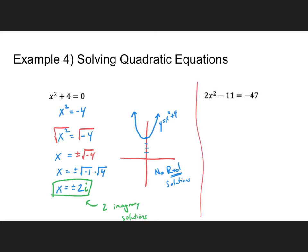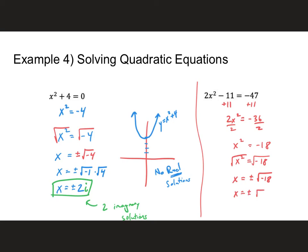Let's look at 2x squared minus 11 equals negative 47. Add 11 to both sides: 2x squared equals negative 36. Divide both sides by 2: x squared equals negative 18. Take the square root of both sides: x equals plus or minus the square root of negative 18. Simplifying — negative 1 times 9 times 2 — the square root of 9 is 3 and the square root of negative 1 is i. Final answer: plus or minus 3i√2.